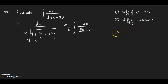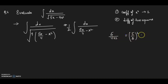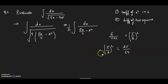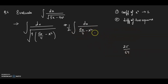We divide the coefficient of x, which is 5/4, by 2 to get 5/8, then square it to get 25/64. We add and subtract 25/64 inside the denominator. So this becomes 1/2 integration of dx divided by √(5x/4 − x² + 25/64 − 25/64).